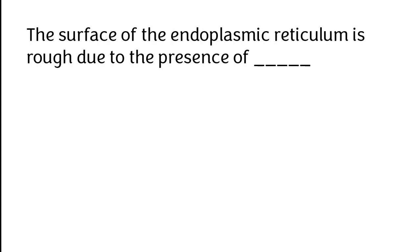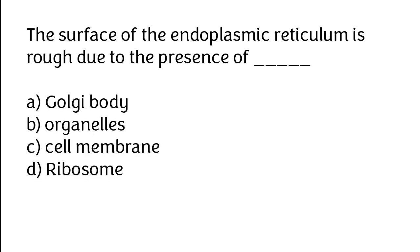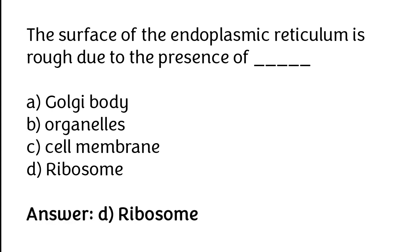The surface of the endoplasmic reticulum is rough due to the presence of: Golgi body, organelles, cell membrane, or ribosome. The correct answer is option D. The surface of the endoplasmic reticulum is rough due to the presence of ribosome.